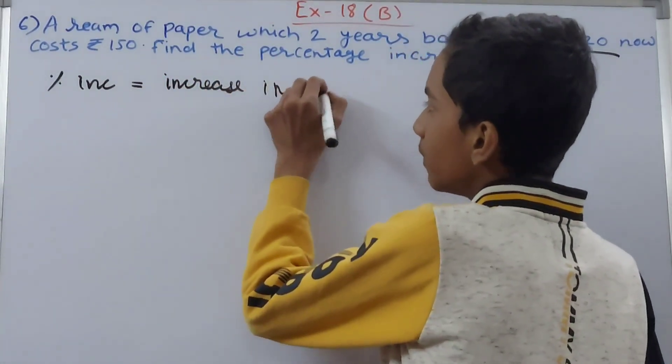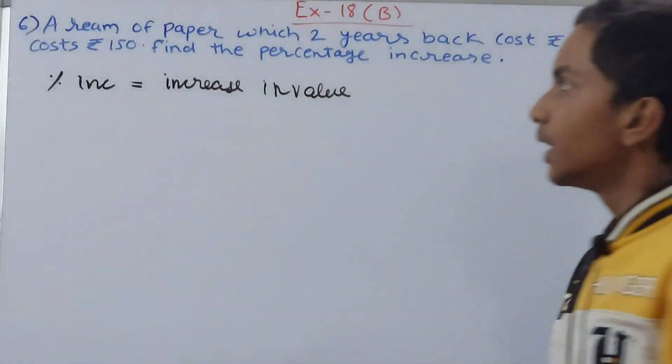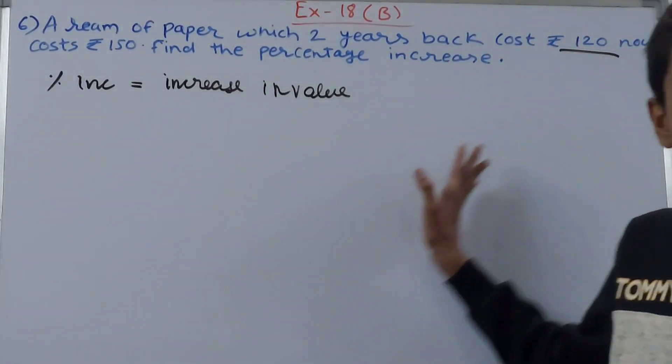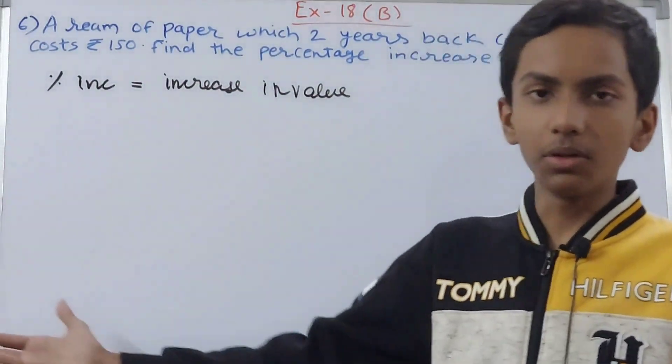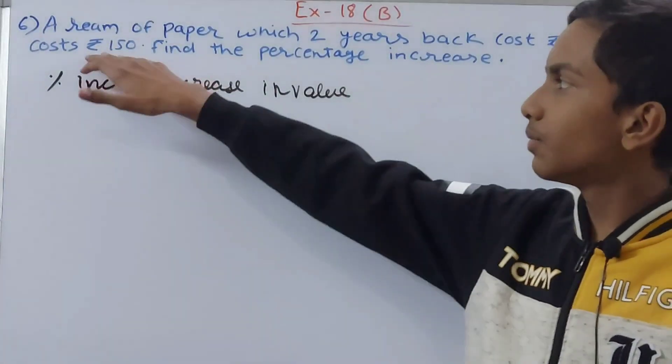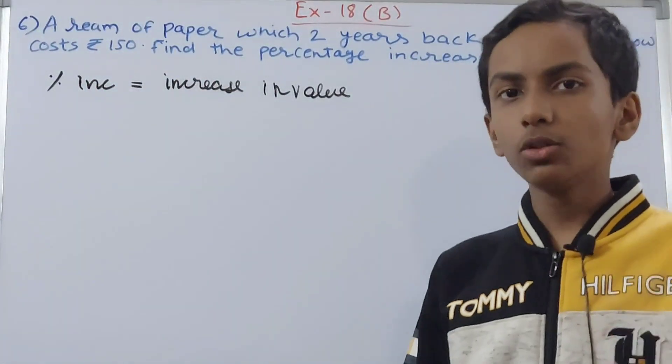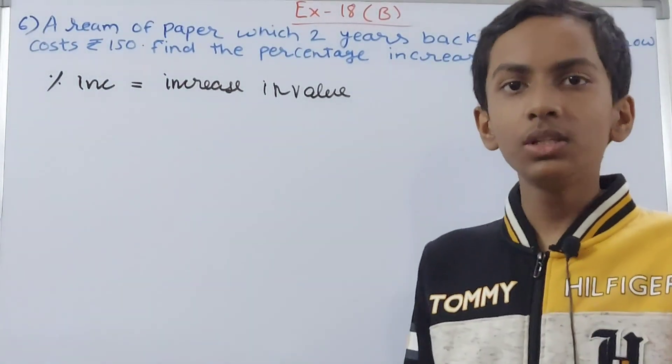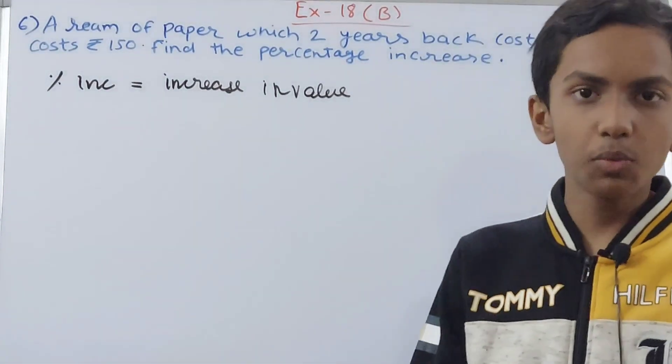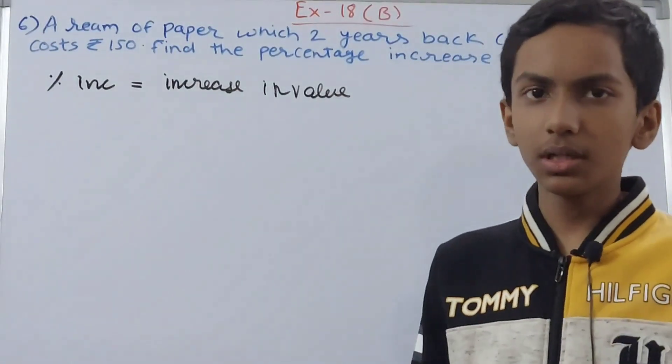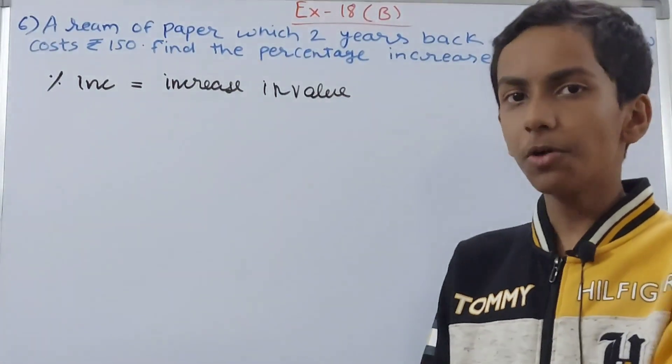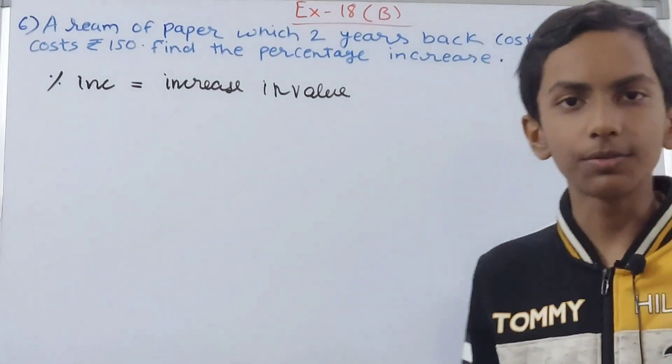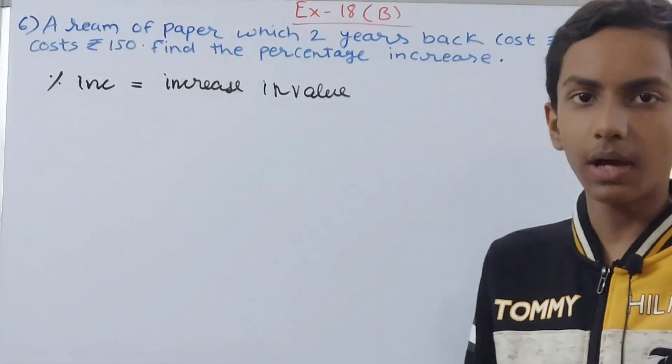The original value was 120 and the new value that we got after increasing was 150. So 150 minus 120 gives us the amount that is increased. It can be decreased as well - suppose from 120 it went to 90, there is a decrease of 30 rupees. From 120 to 150, there is an increase of 30 rupees. This is what increase in value is.